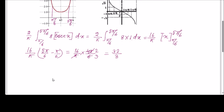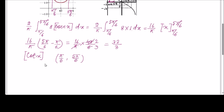Now for the second part involving [cot x]. Over the interval π/6 to 5π/6, let us analyze cot x. At π/6 the value is √3, at π/4 the value is 1, at π/2 it is 0, at 3π/4 it is −1, and approaching 5π/6 the value is around −√3. So cot x changes significantly and we must break the limit.